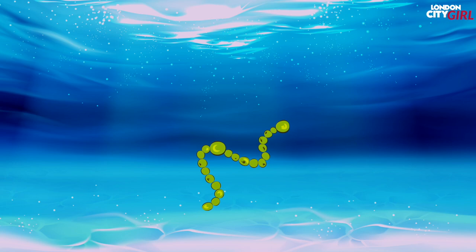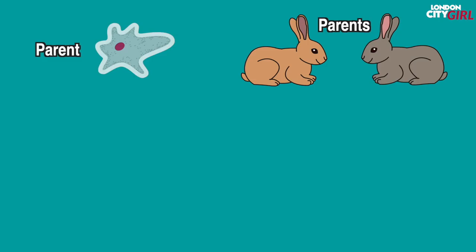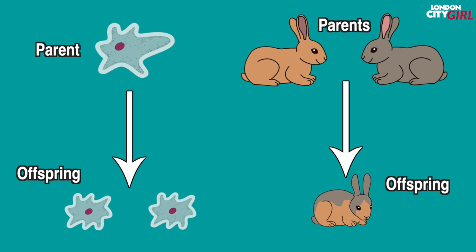Some bacteria learned how to use this oxygen and life became more complex. The earliest plants and animals evolved. 541 million years ago the Cambrian explosion saw a great diversification of animal life. When living things reproduce they create offspring that inherit a mix of their parents' traits as well as developing traits of their own. Small changes can add up over multiple generations to create dramatic changes and organisms evolve into different species.